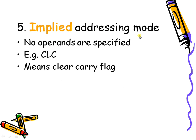In implied addressing mode, no operands are specified. The instruction implicitly specifies one operation — for example, CLC performs a clear operation on the carry flag. This is called implied or implicit addressing mode. In the next session, we will discuss the instruction set. Thank you.